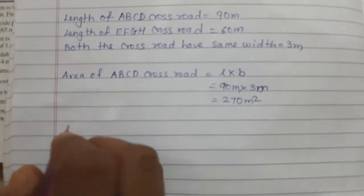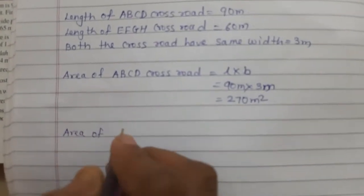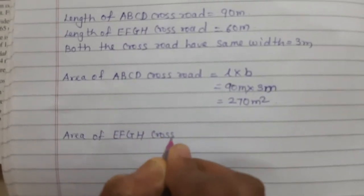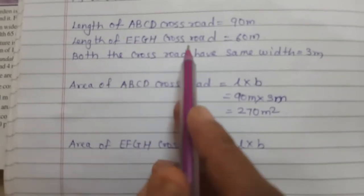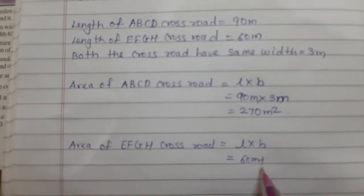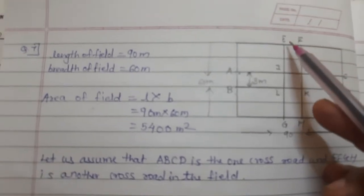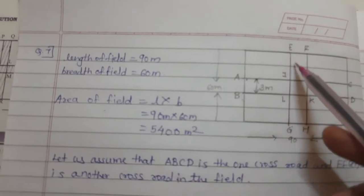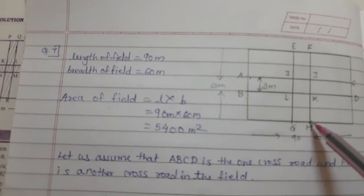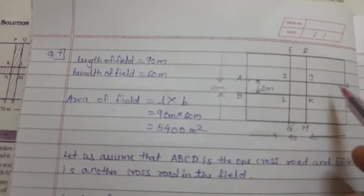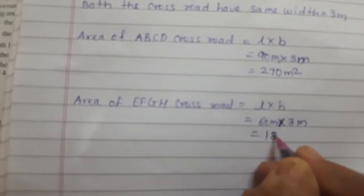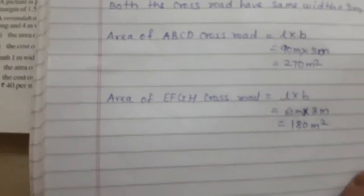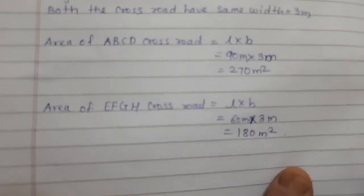Now area of EFGH cross road. Length multiplied by breadth. Length of EFGH cross road is 60 meter. Width is 3 meter. So 60 into 3 = 180 meter square. We got area of EFGH cross road as 180 meter square.